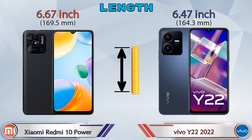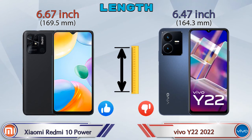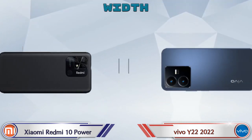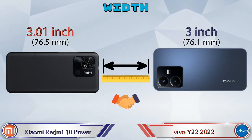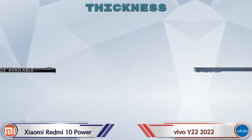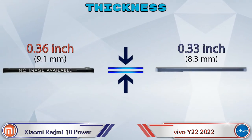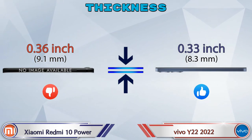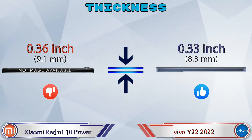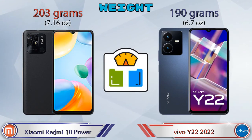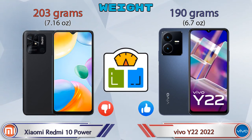Now let's check the dimensions. The length of Redmi 10 Power is 6.67 inches and Y22 is 6.47 inches, which is less than Redmi 10 Power. Width: Redmi 10 Power is 3.01 inches and Y22 is 3.00 inches, which are almost the same. Thickness: Redmi 10 Power is 0.36 inches and Y22 is 0.33 inches. Weight: Redmi 10 Power is 203 grams and Y22 is 190 grams.